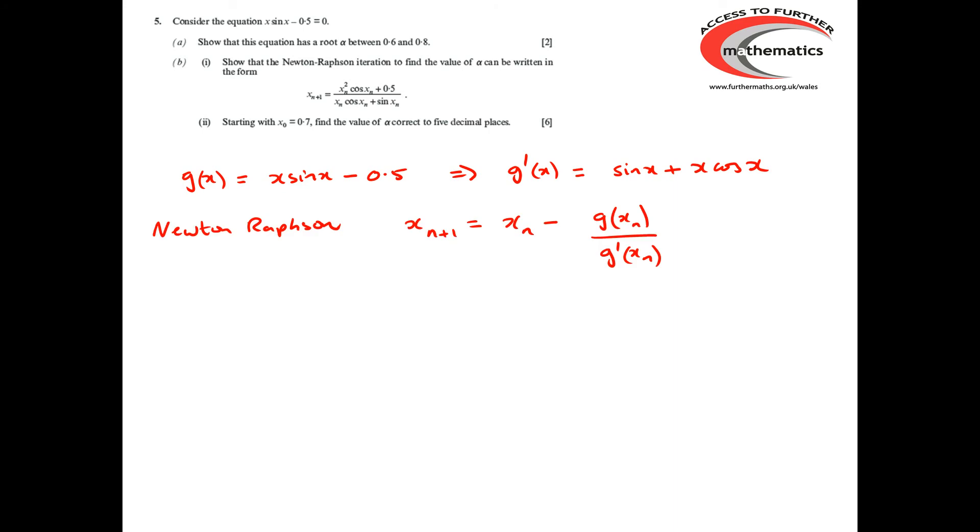The Newton-Raphson iteration is x_(n+1) = x_n - g(x_n)/g'(x_n). So that becomes x_n - [x_n sin(x_n) - 0.5]/[sin(x_n) + x_n cos(x_n)]. Now to get the required answer, we need to write all of this as a single fraction. The single fraction will have a common denominator of sin(x_n) + x_n cos(x_n). To move to the common denominator, we've had to multiply this by the common denominator. So the x_n becomes [x_n sin(x_n) + x_n² cos(x_n)]/[sin(x_n) + x_n cos(x_n)]. And we haven't had to do anything at all to this term.